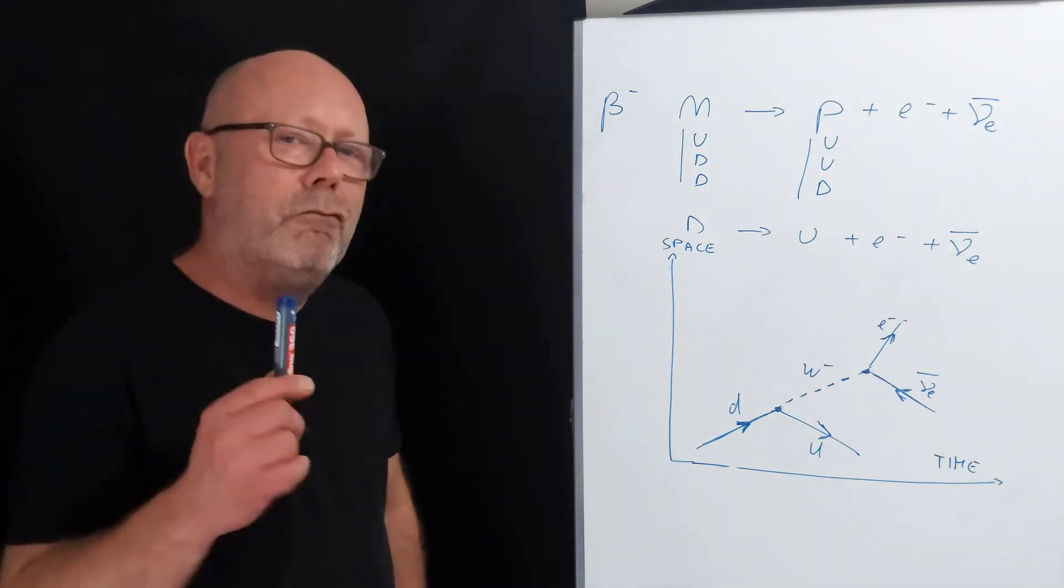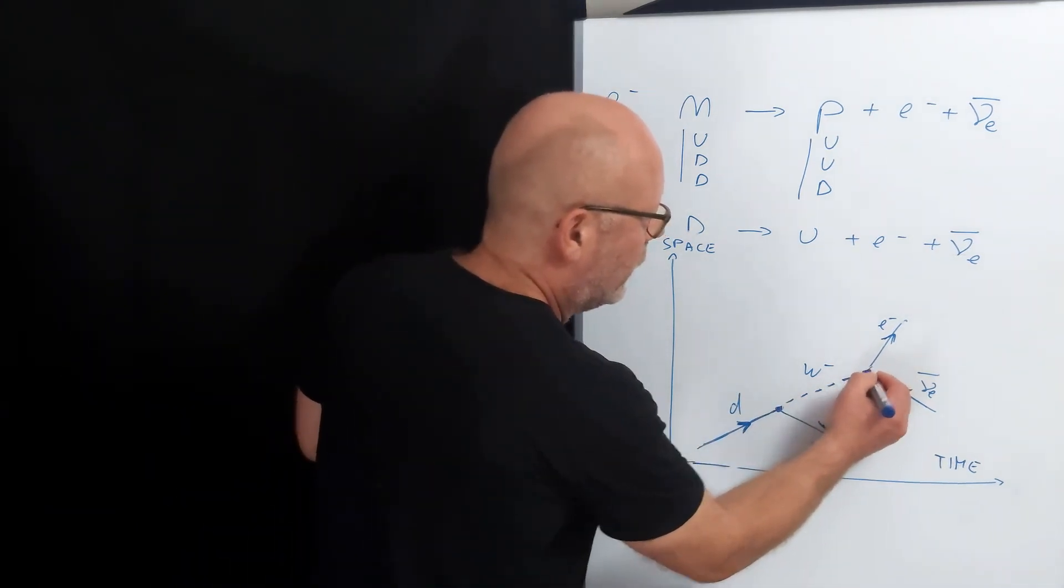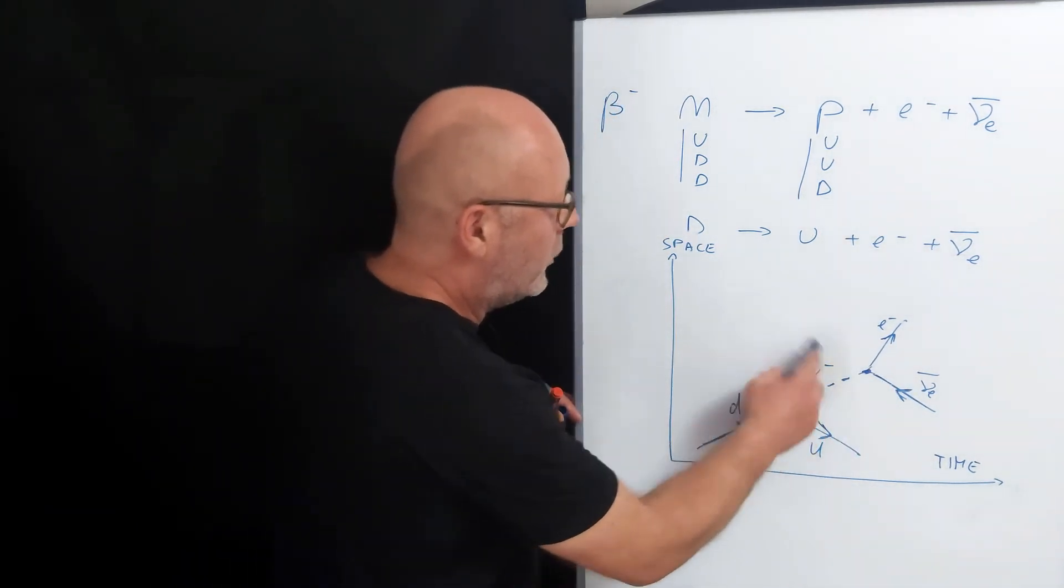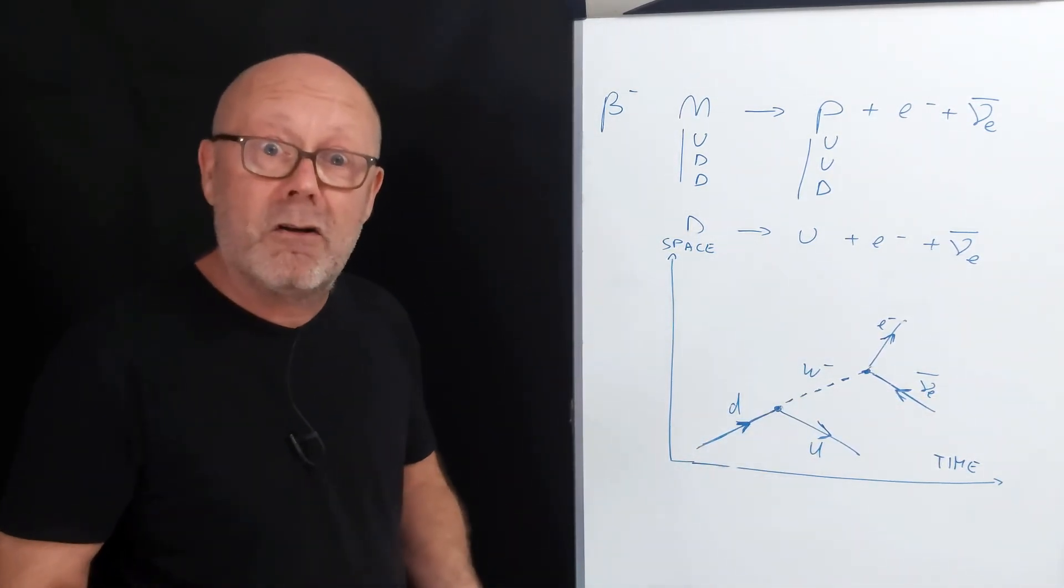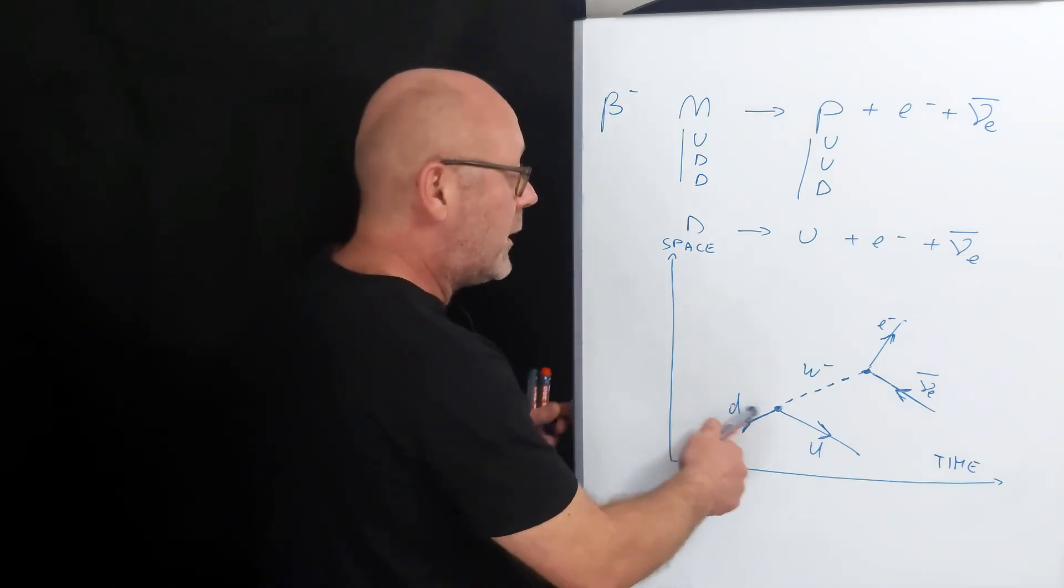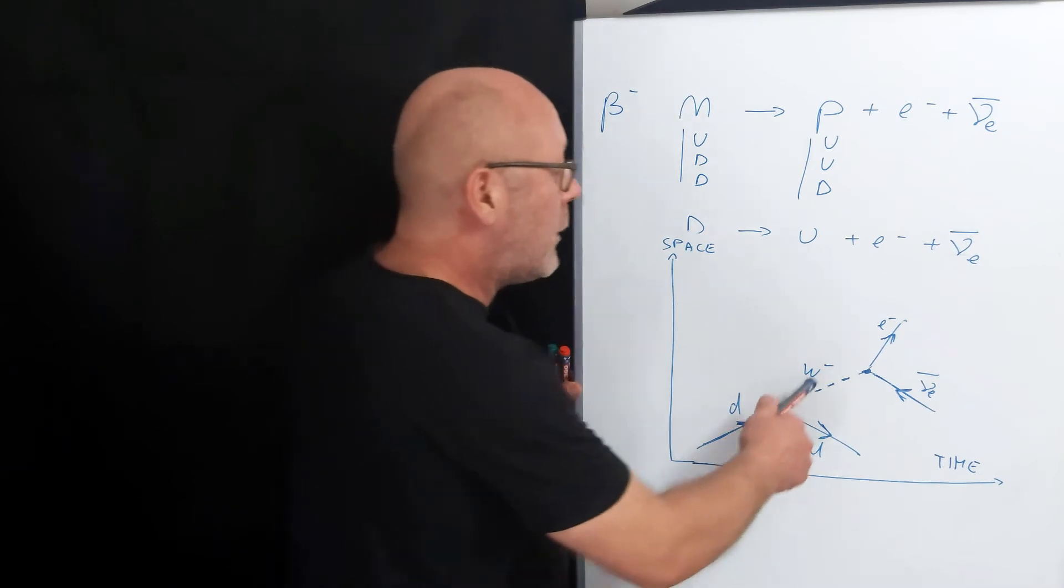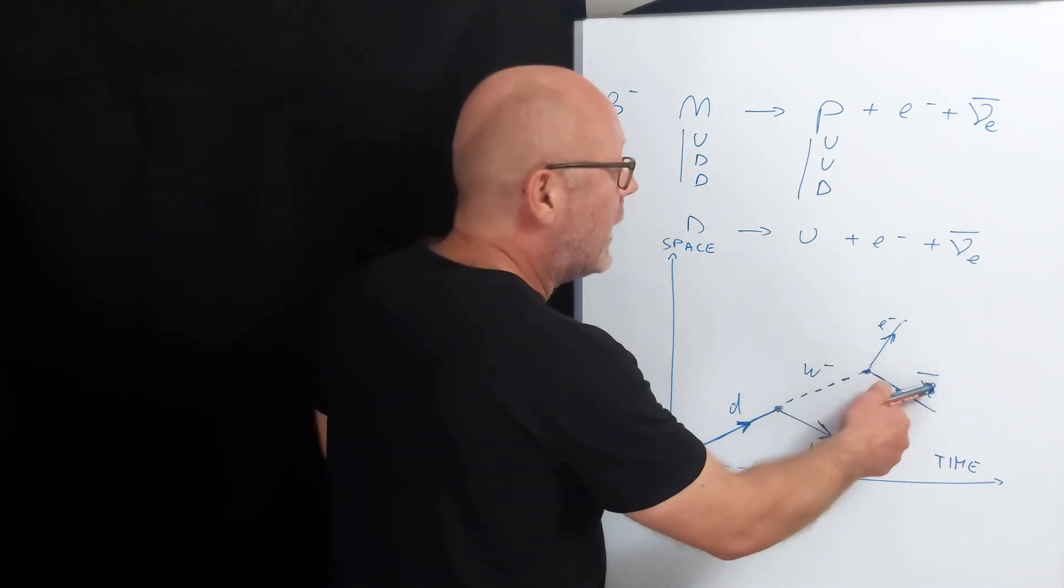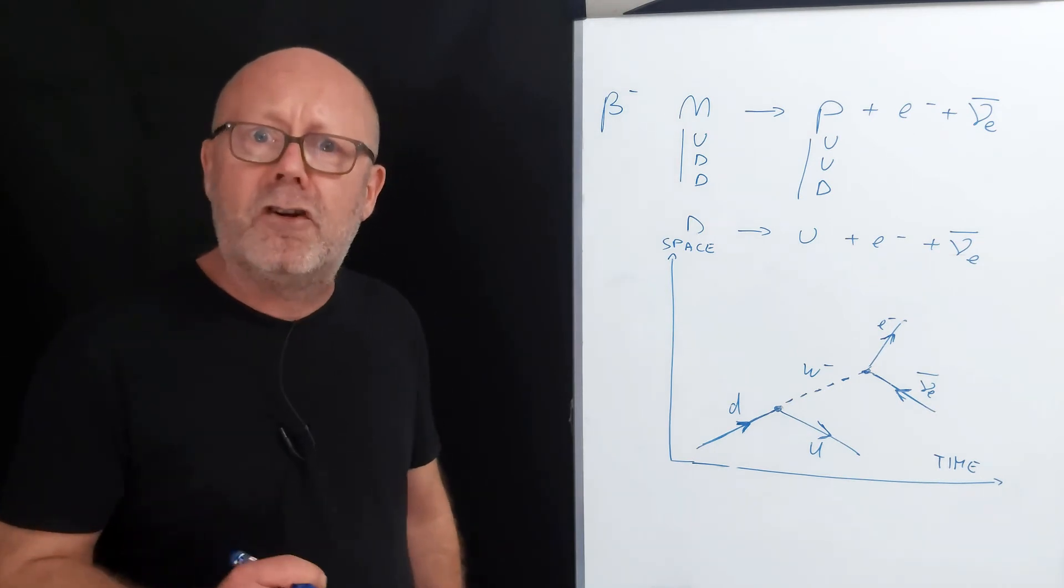And finally, really important, the vertices. The vertices have a junction between the symbols. Actually, you can see them like the place where you have the reaction going on. For example, the down becomes an up and spits a W- boson at this point. Or the W- boson spits out an electron and an anti-neutrino at this point. It's kind of the place where there's a mini-reaction going on.